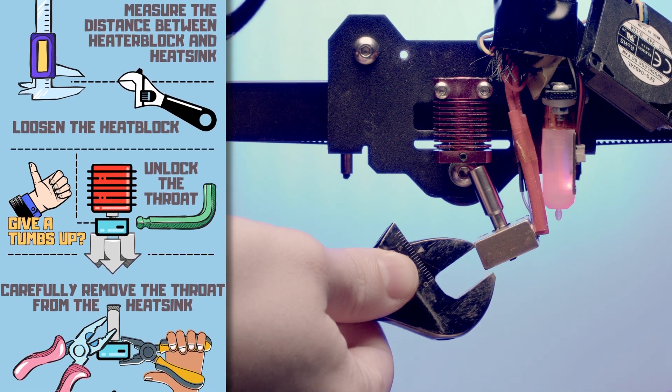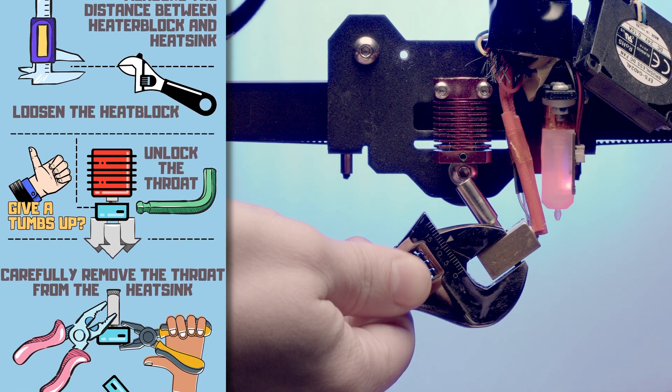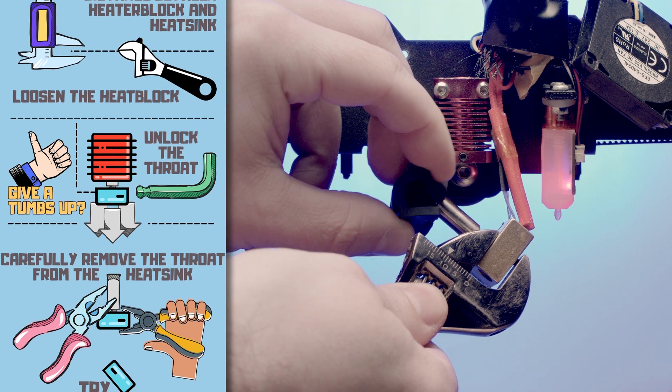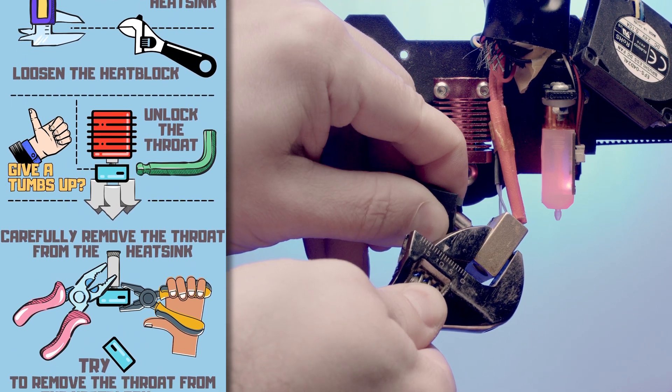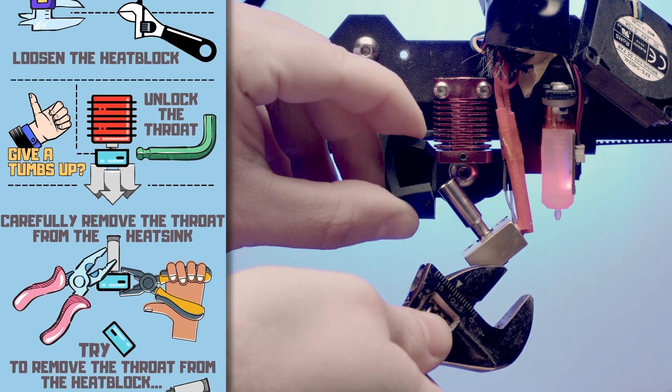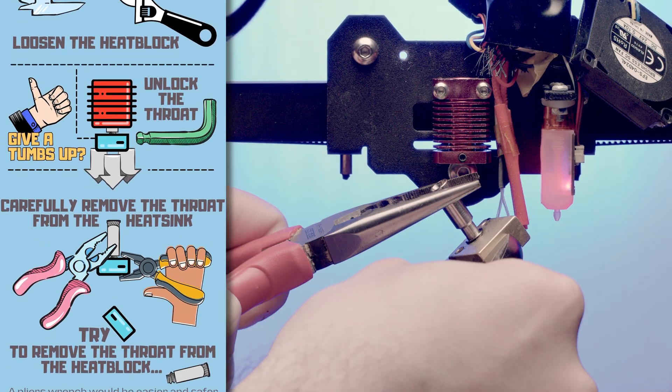Everything was smooth until this point. It would have been a lot easier if I removed the thermistor and the heating element. I also should have used a plier wrench instead of a monkey wrench to get a better grip on the heating block.